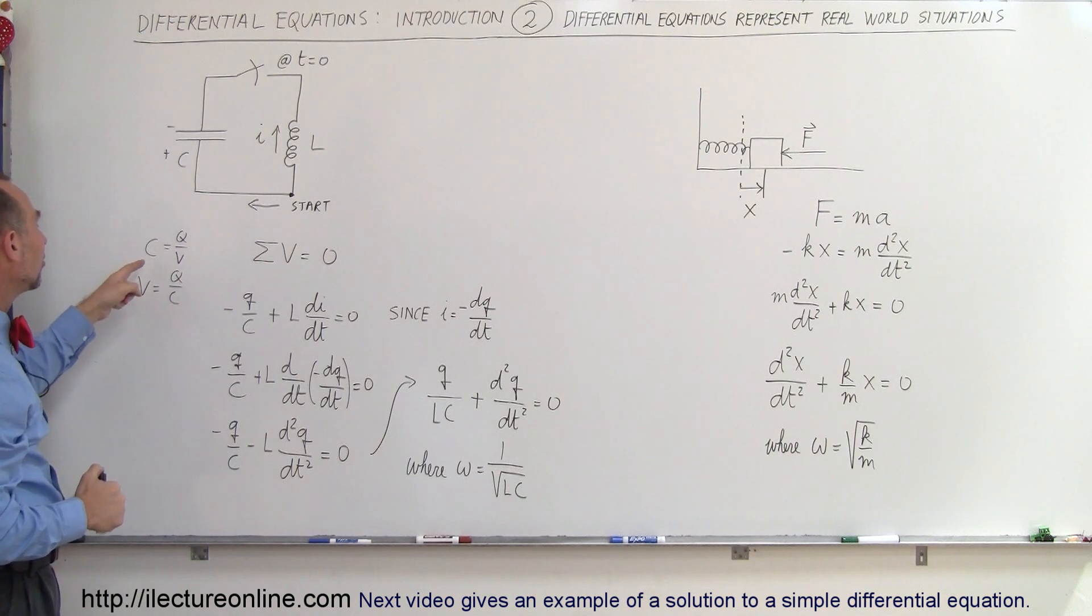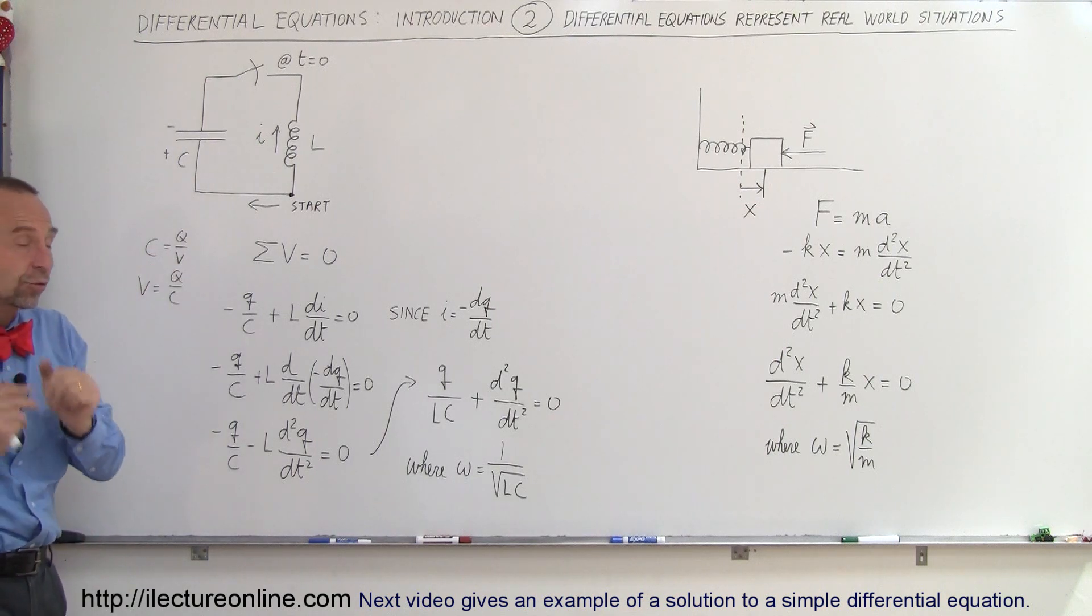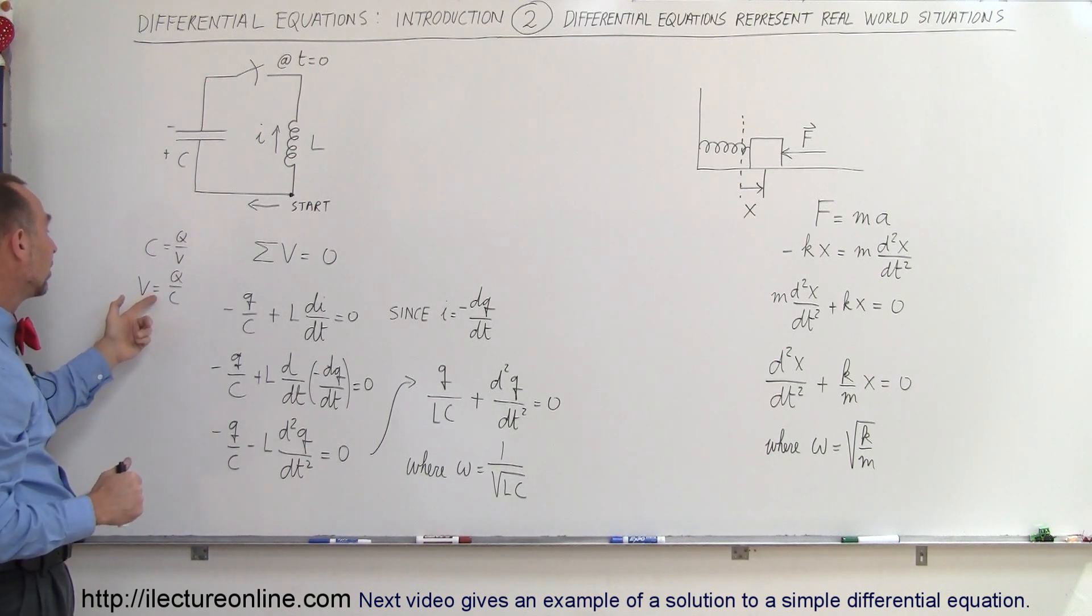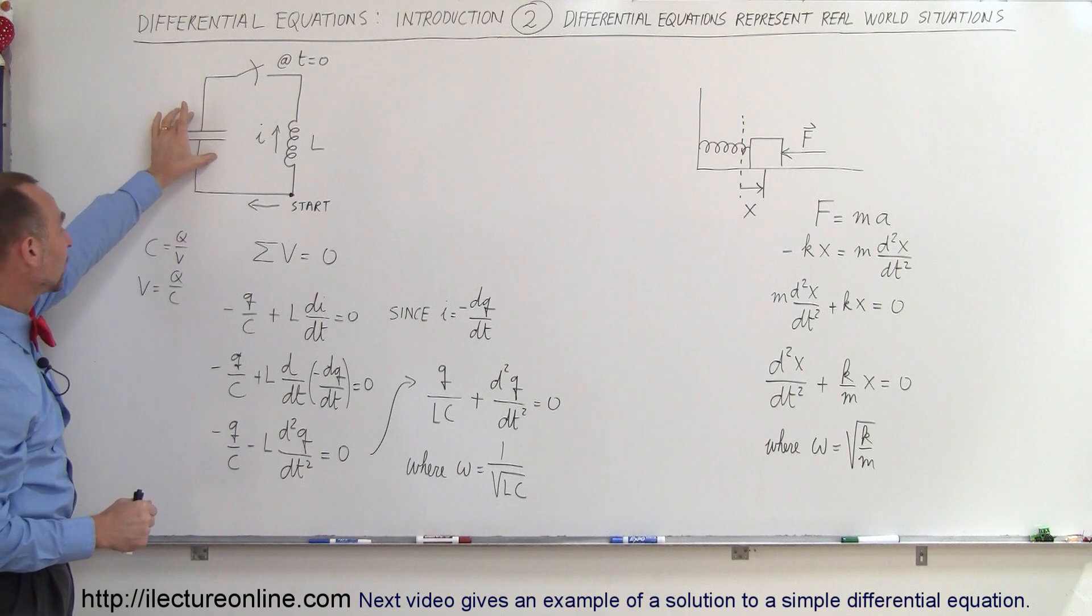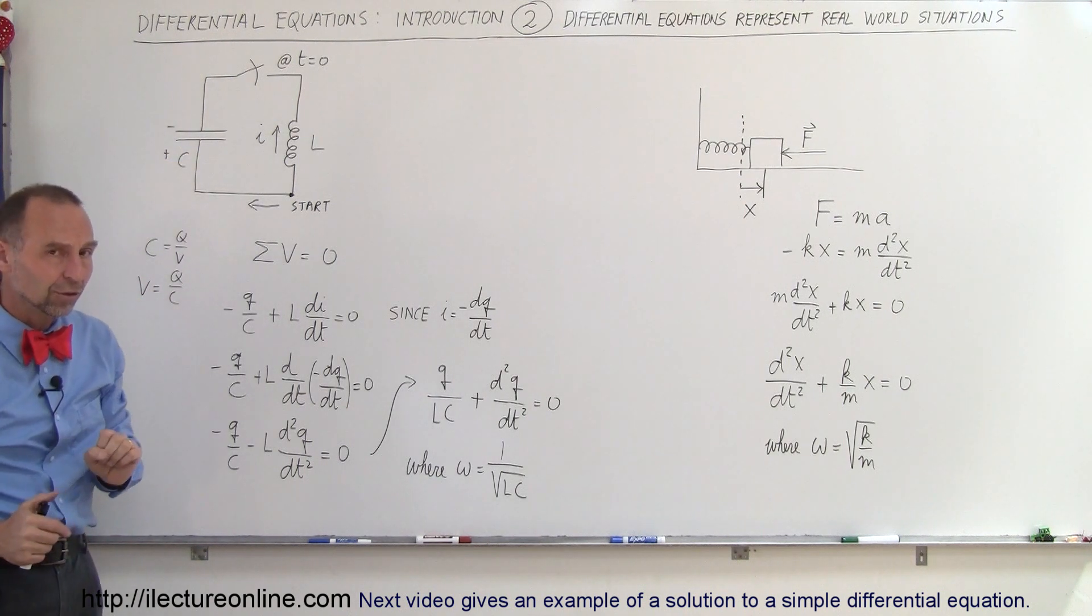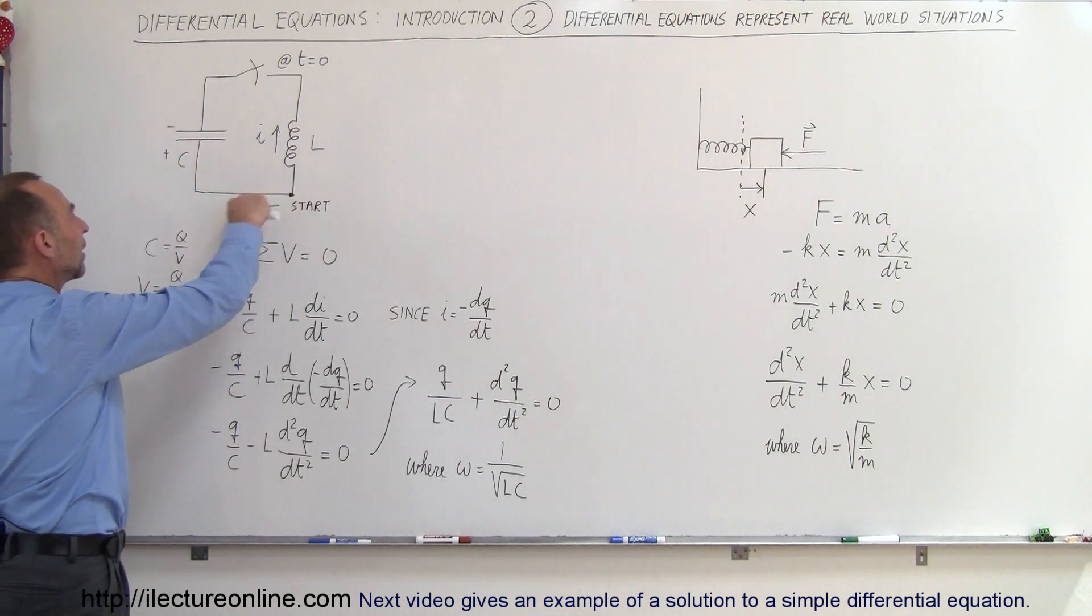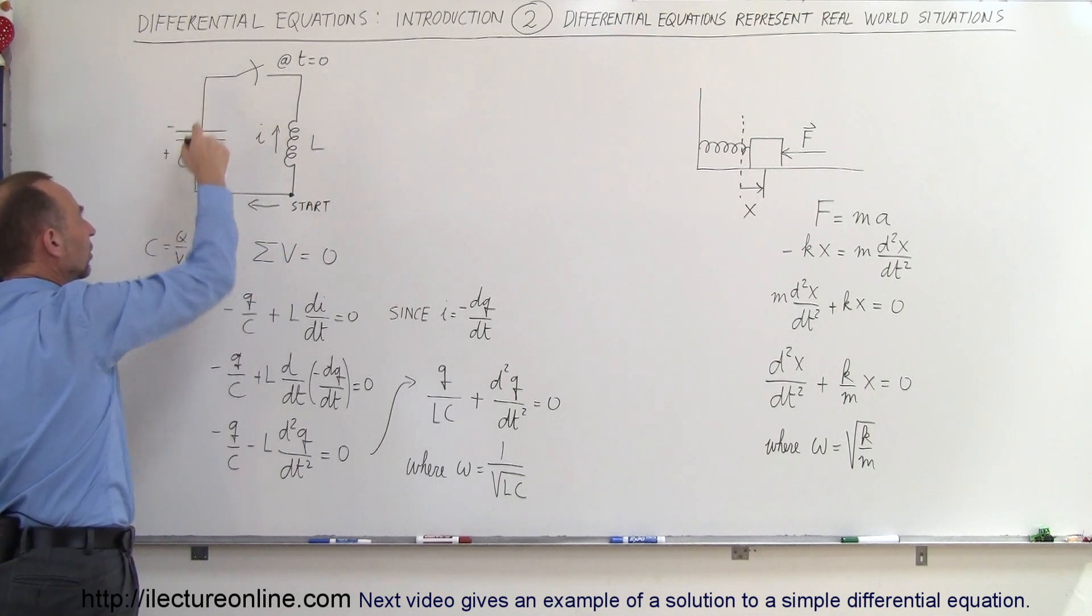We also know that the definition of capacitance is the ratio of the charge on the capacitor divided by the voltage across the capacitor, or the voltage is equal to the ratio of the charge on the capacitor divided by the capacitance. So, when we go around the circuit, we start at this point right here, we go around the circuit.